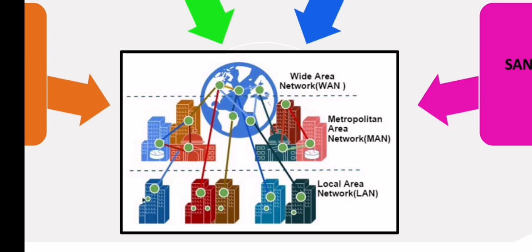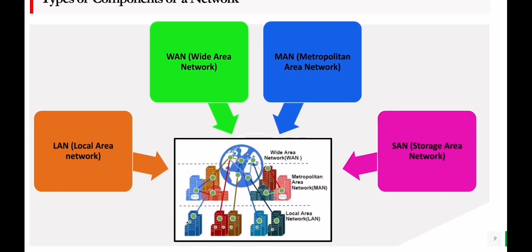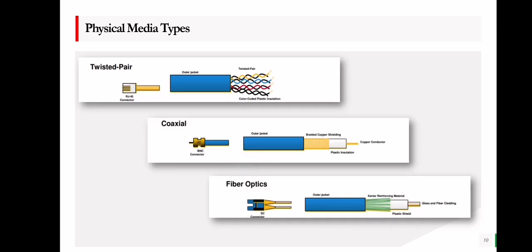Here is an illustration of the four types of networks: wide area network, metropolitan area network, and local area network. The SAN is not shown here because it makes use of storage devices like the hard disk drive.